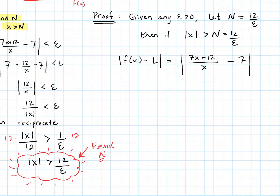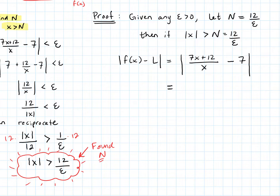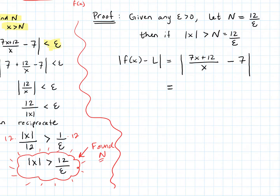Here's the key: I'm not going to assume that this is less than epsilon — I'm going to prove it. I won't state the inequality yet; I'll continue simplifying with equalities and then arrive at the less-than inequality. A lot of this will look similar to the side work, but the key difference is I'm not assuming what I'm trying to prove.